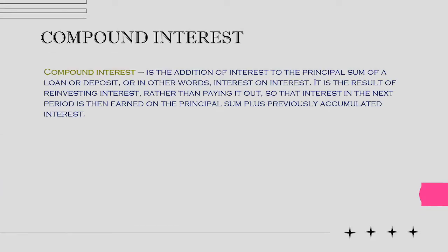Compound interest is the addition of interest to the principal sum of a loan or deposit — or in other words, interest on interest. It is a result of reinvesting interest rather than paying it out, so that interest in the next period is then earned on the principal sum plus previously accumulated interest. Compound interest is standard in finance and economics.